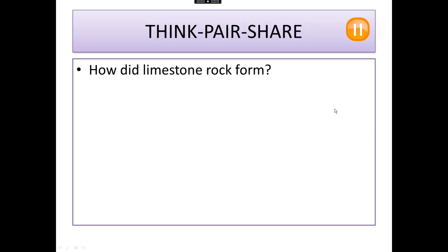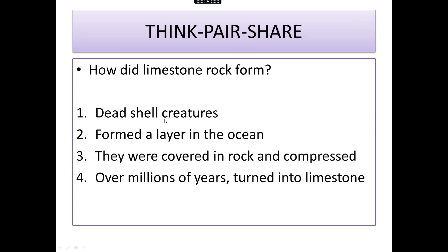Pause the video and think of a sentence: how did limestone rock form? Here's my answer. Shell creatures with shells made of calcium carbonate died, formed a layer in the ocean. The layers were covered and compressed, and over millions of years the layers of shell creatures turned into limestone rock. So again, this is not a way that we can rely on to take carbon dioxide out of the atmosphere, because it takes millions of years for limestone rock to form.